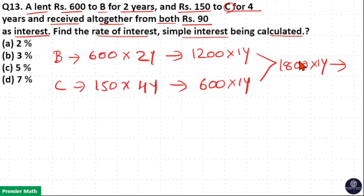Now this 1800 rupees principal and number of years is 1 year. And he received total Rs. 90 as interest from these two, B and C. That is Rs. 90 he received for this 1800 principal for 1 year.